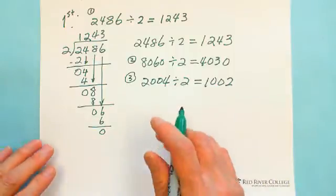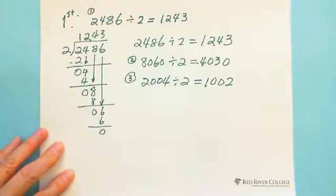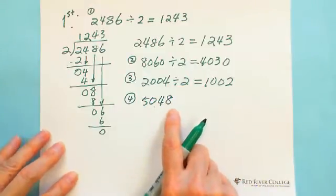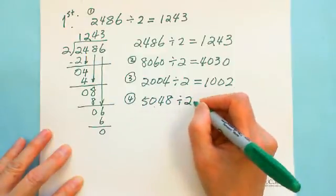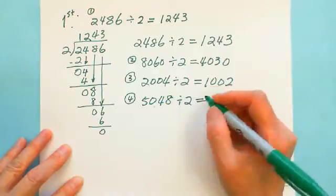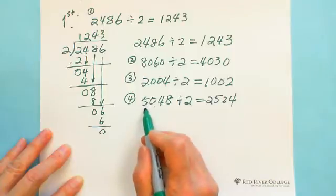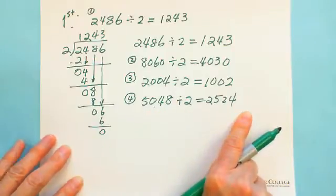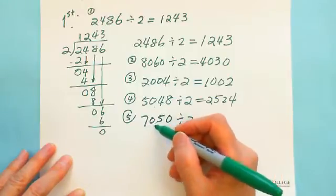Some situations have some even digits and some odd digits. For example, 5048. The digit 48 is an even number, but 5 is an odd digit. When you divide it by 2, we can say: half of 50 is 25, half of 48 is 24. We still get the answer very easily. Similarly, 7050 divided by 2: half of 70 is 35, half of 50 is 25.